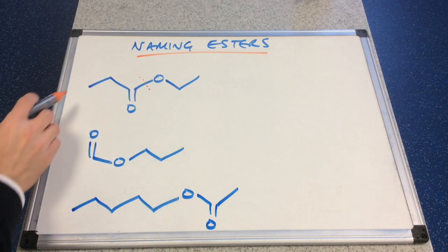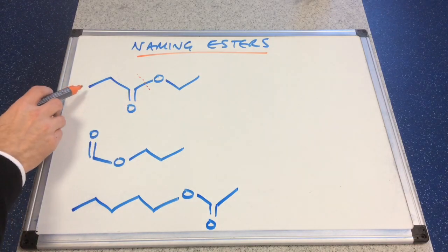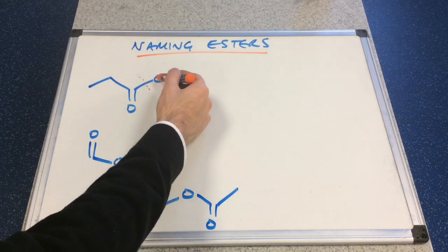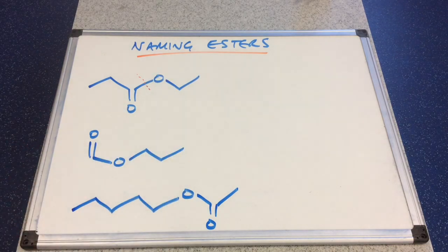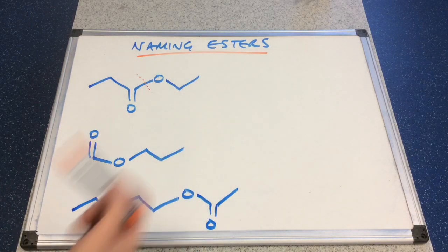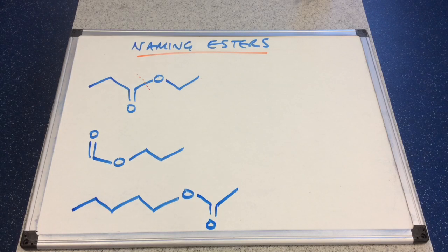So what have we got? The oate part — the bit bonded to the C double bond O — is 1, 2, 3 carbons, so this is propanoate. And the bit after the single bonded O is 1, 2 carbons — ethyl. Remember prefix, so this is the first part of the name. So this will be ethyl and the suffix is propanoate. So this ester is called ethyl propanoate.